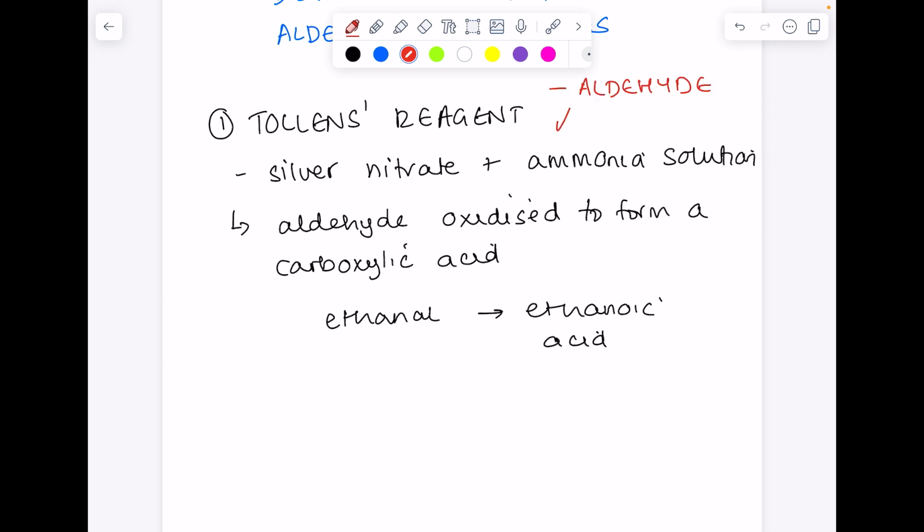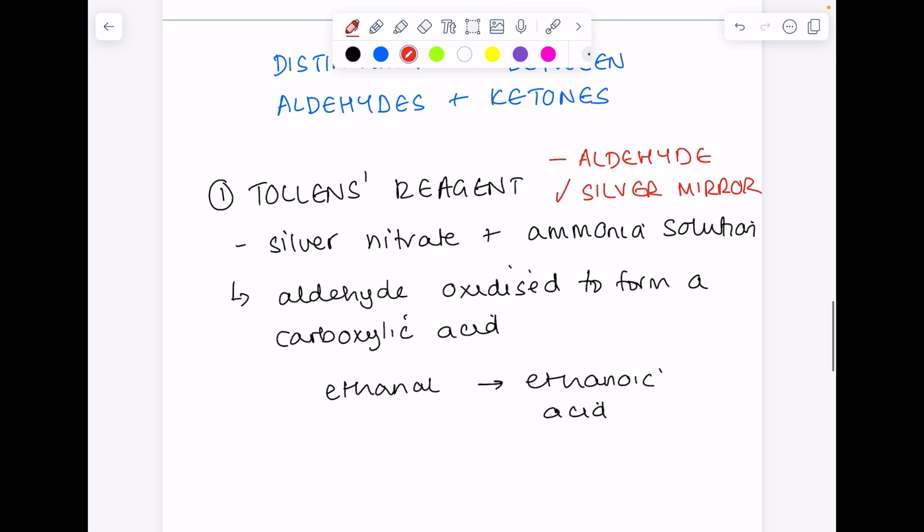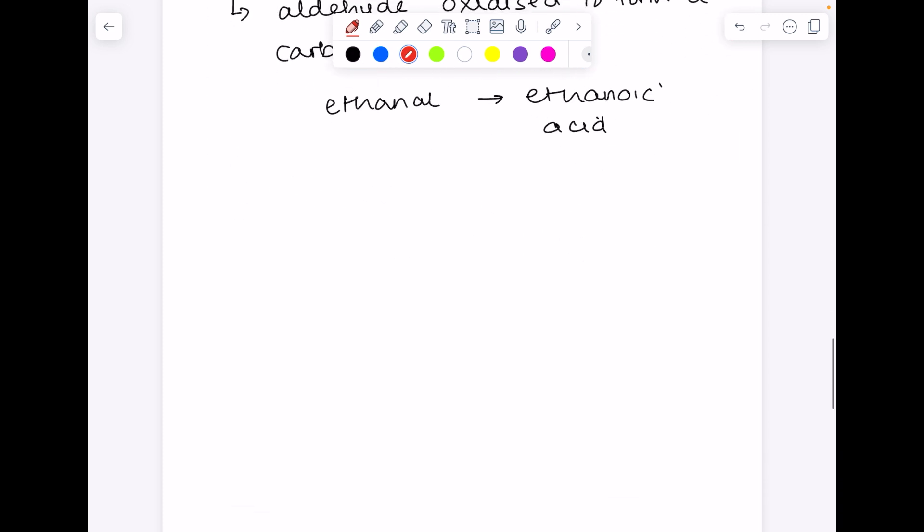With an aldehyde, you get what's called a silver mirror. So that's a big tick with an aldehyde for a silver mirror. It doesn't happen with a ketone. And what is that silver mirror?